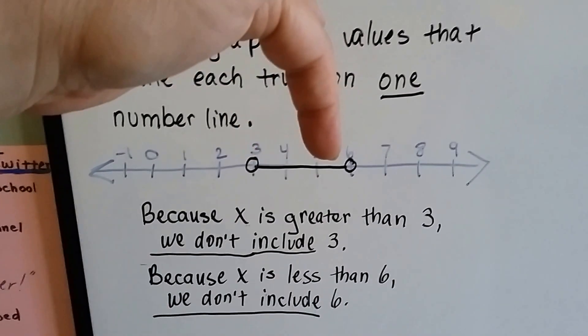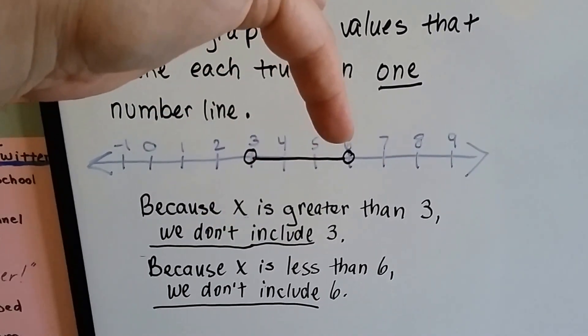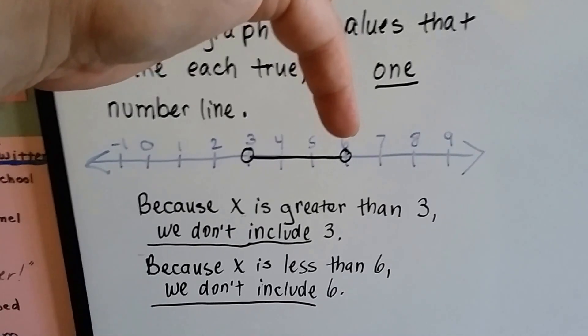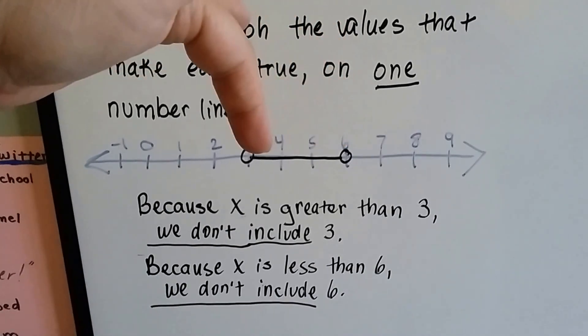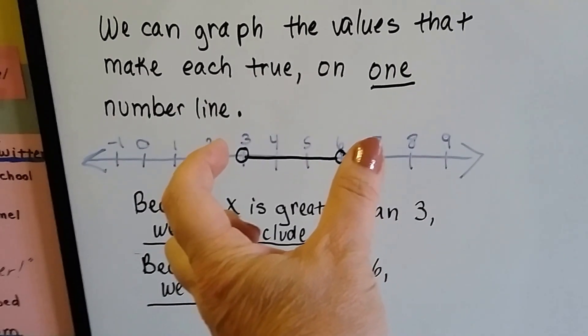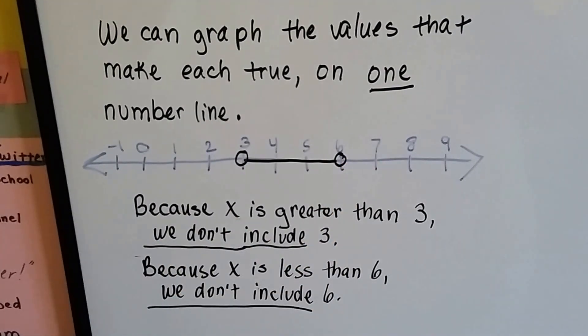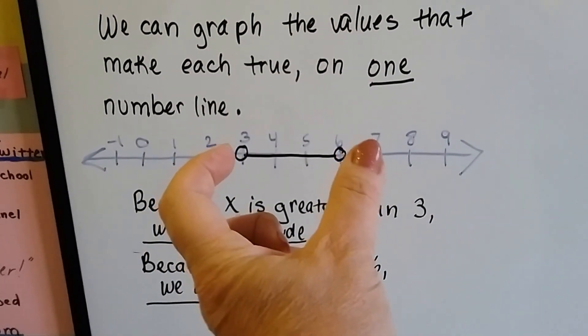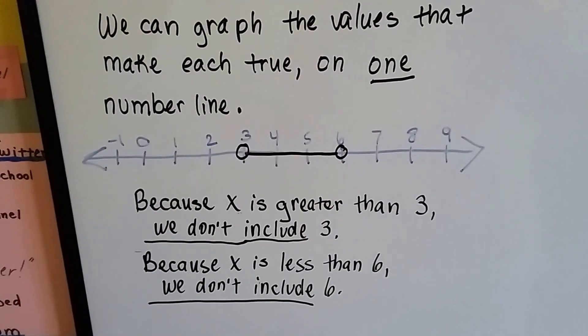And we continue on this way, but we have to stop because X is less than 6. So we put an open circle here to show it's an open set, and that keeps us contained right in between here. So if X is greater than 3 but less than 6, we know it could be any value that's in between here on the number line.